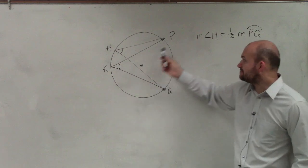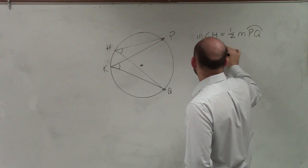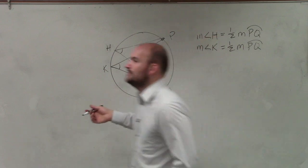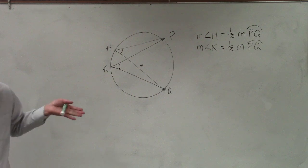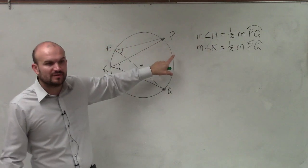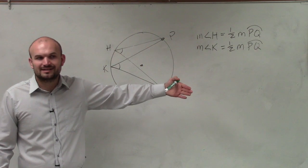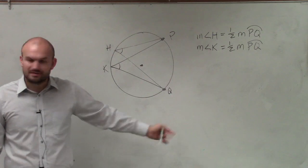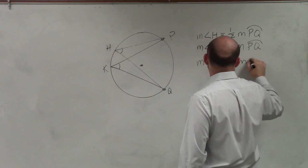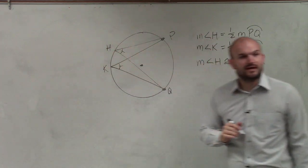What about this? Would that be the measure of one-half of that arc? Yes. The measure of angle K is equal to one-half the measure of arc PQ. So what I notice is, both of the measures of these angles are one-half the arc of PQ. Then I can say they are exactly the same measure. Therefore, the measure of angle H is congruent to the measure of angle K, meaning those two angles are equal.